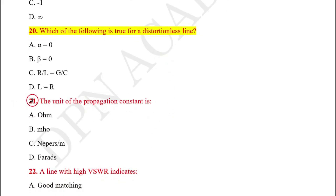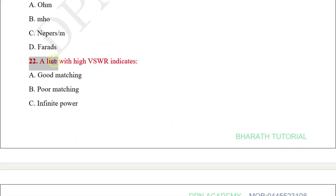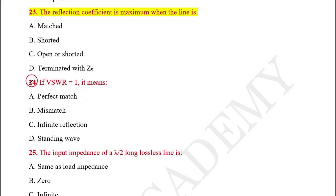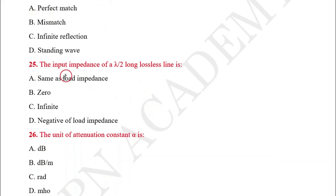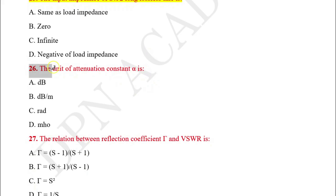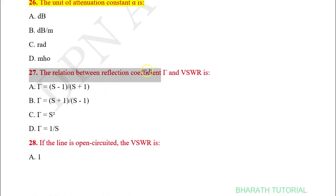Question number twenty-one: The unit of propagation constant is — most important. Question number twenty-two: A line with high VSWR indicates? Question number twenty-three: The reflection coefficient is maximum when the line is? Question number twenty-four: If VSWR is equal to 1, it means? Question number twenty-five: The input impedance of a lambda/2 long lossless line is? Question number twenty-six: The unit of attenuation constant alpha is — most important. Question number twenty-seven: The relation between reflection coefficient tau and VSWR is?